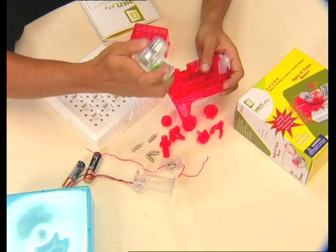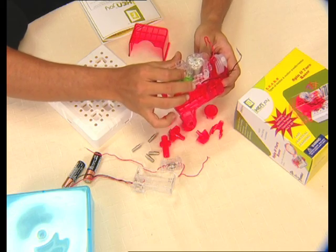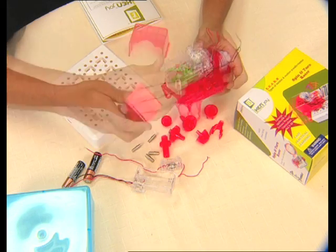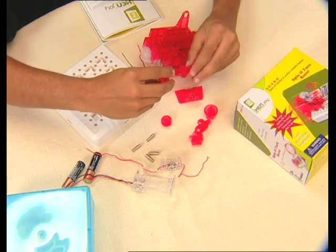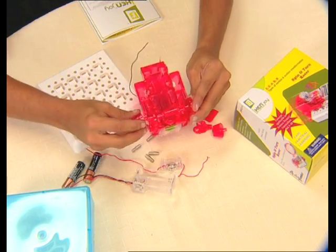We will then attach the gearbox to the car. The gearbox is like an engine of the car. The next step is to attach the axle and the wheel. This axle wheel assembly needs to be attached to the basic car body.